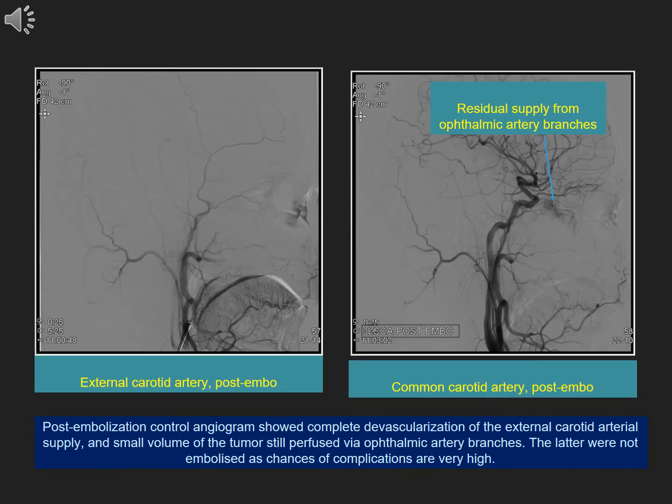Post-embolization control angiogram showed complete devascularization of the external carotid arterial supply, and a small volume of the tumor was still perfused via ophthalmic artery branches. The latter were not embolized, as the chances of complications are very high.